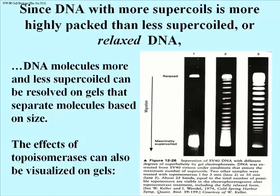This allows us to see the effects of topoisomerases on super-coiled DNA. Lane 1 shows maximally super-coiled DNA having migrated pretty far down the gel, as if it were comprised of small DNA molecules. DNA in the middle and right lanes has been treated with topoisomerase 1 for 3 minutes or 30 minutes, respectively. As the enzyme caused the DNA to become progressively more relaxed, the DNA behaves as if it were larger and larger. Each band represents a next level up or down in the number of super-coils.